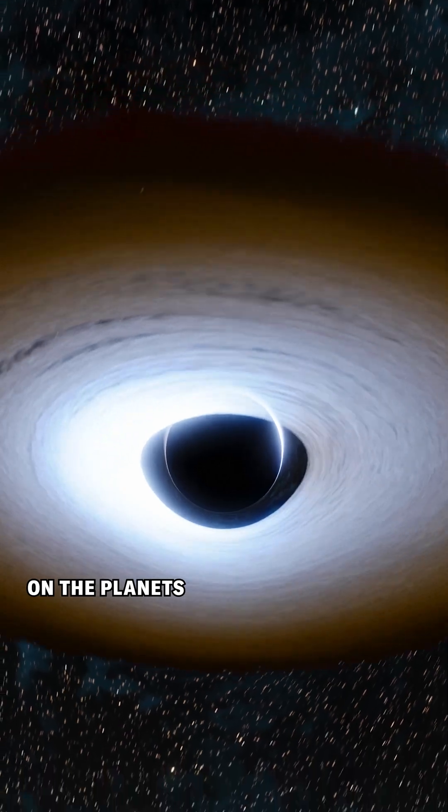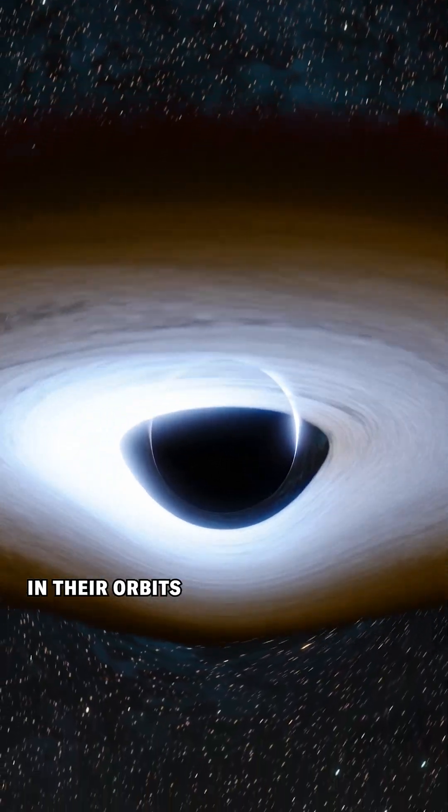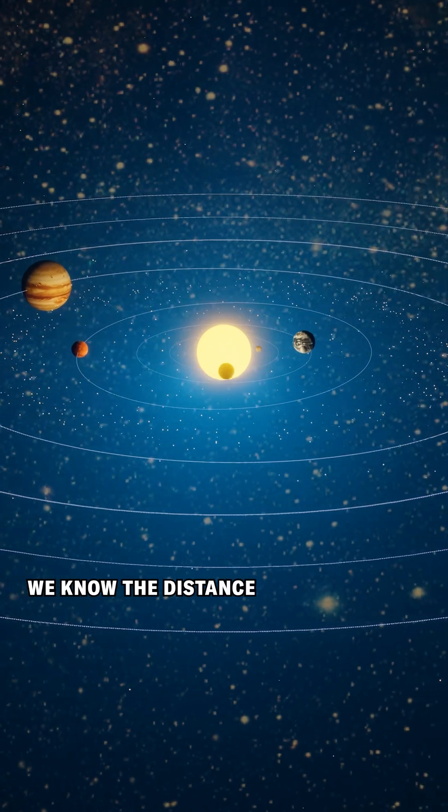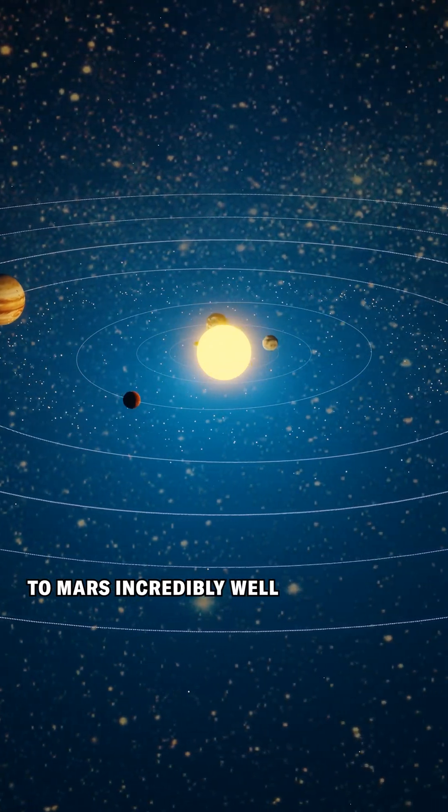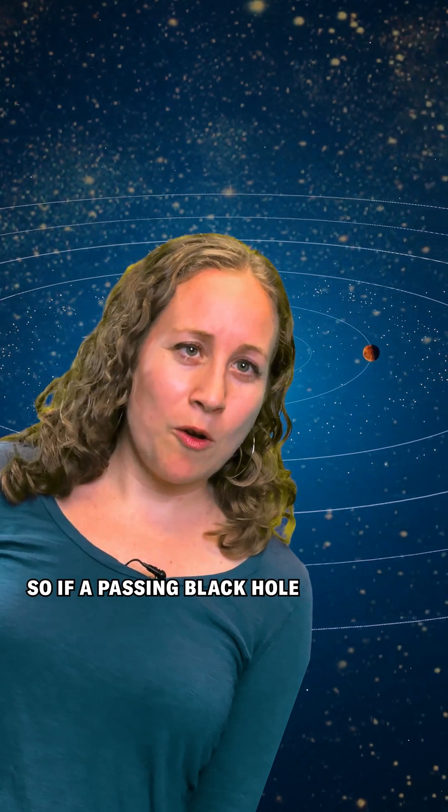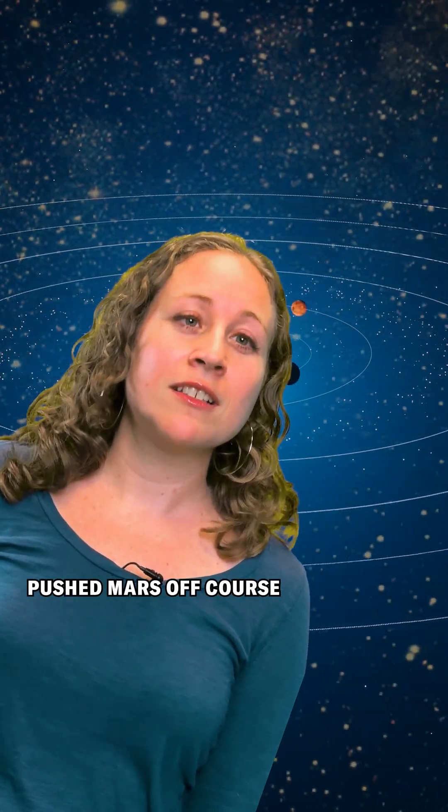They could be tugging on the planets, making them wobble in their orbits in a way that we could actually detect. For instance, we know the distance to Mars incredibly well, to within about 10 centimeters. So if a passing black hole pushed Mars off course, we would see it.